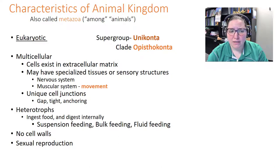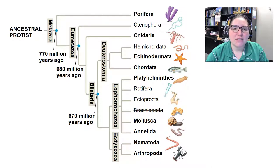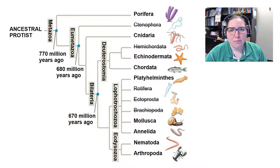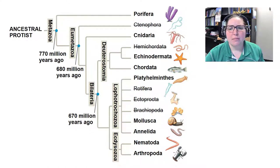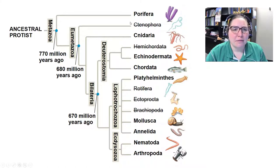Animals have all different kinds of feeding patterns like suspension feeding, bulk feeding, or fluid feeding. They do not have a cell wall and they do sexual reproduction. We'll cover porifera, cnidarians, echinodermata, chordata, platyhelminthes, mollusca, annelids, nematodes, and arthropods.